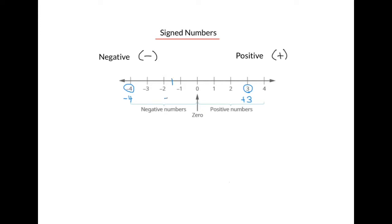Sign numbers can also be decimals. For example, between negative 1 and negative 2 is negative 1.5, and between 0 and 1 is positive 0.5.